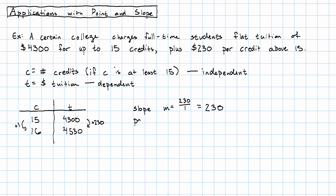Our point, we're going to call that c0, t0, because we have a given value of c and a given value of t. Our given value of c is 15 credits, which goes with the given value of t, $4,300.